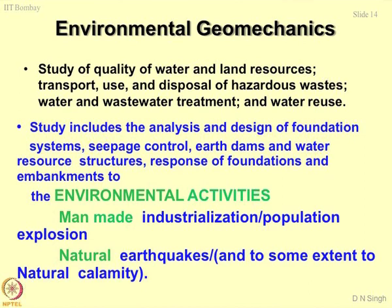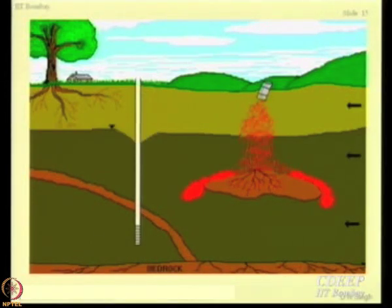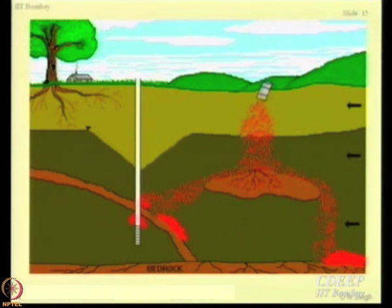An impervious system may become a very pervious system because of prolonged interaction with aggressive environment. Then the shear strength gets affected - if the pore structure gets enlarged, the shear strength, compressibility, and collapse potential get affected. A system which looks very strong today may lose its strength, imperviousness, and collapsibility due to degradation. Natural phenomena like earthquakes, too much flooding, landslides, and tsunamis are also responsible. The realm of environmental geomechanics is increasing day by day.